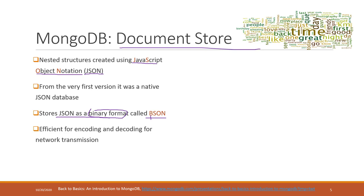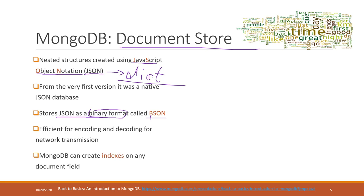If you took the Python class, you can simply think of JSON as a dictionary in Python — you can treat JSON, once loaded in Python, as a dictionary. MongoDB can also create indexes on any document field, so we can still have indexes that can speed up queries.